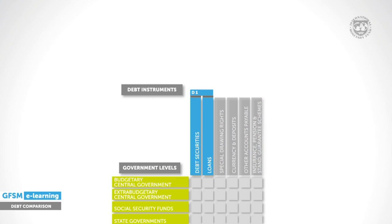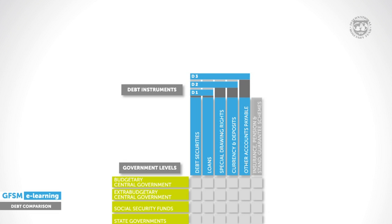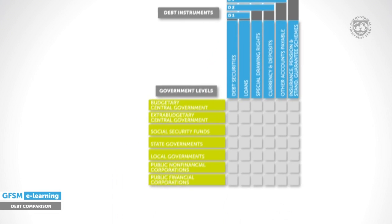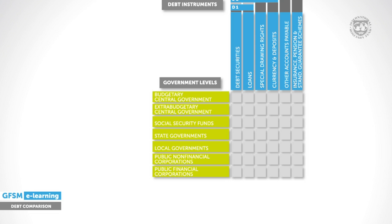The X axis presents D1, comprised of debt securities and loans. D2 adds special drawing rights and currency and deposits to D1. D3 further adds accounts payable, and finally D4 adds insurance, pension and standardised guarantee schemes. The Y axis shows five different aggregation levels of the public sector.